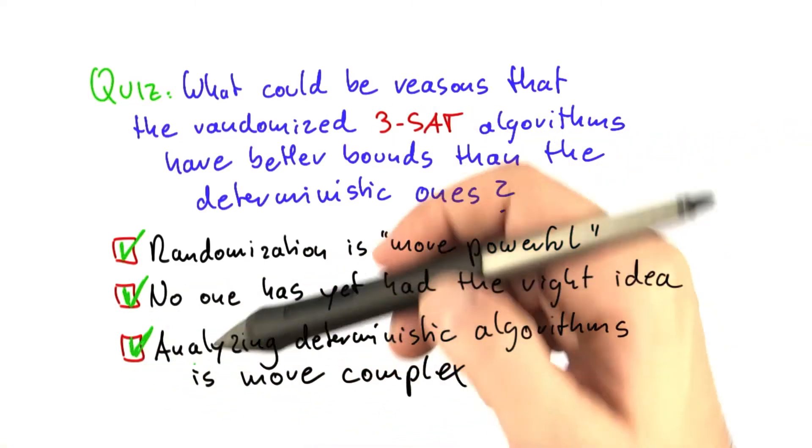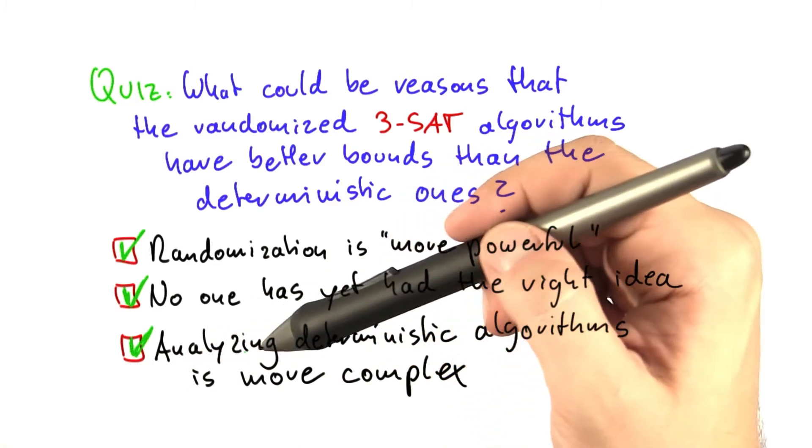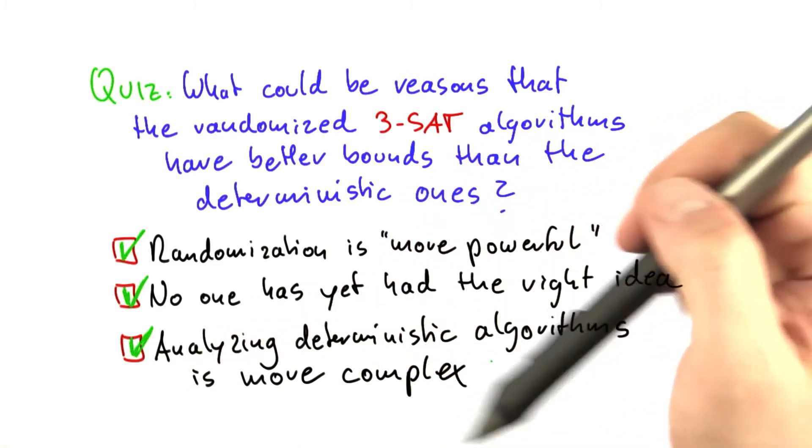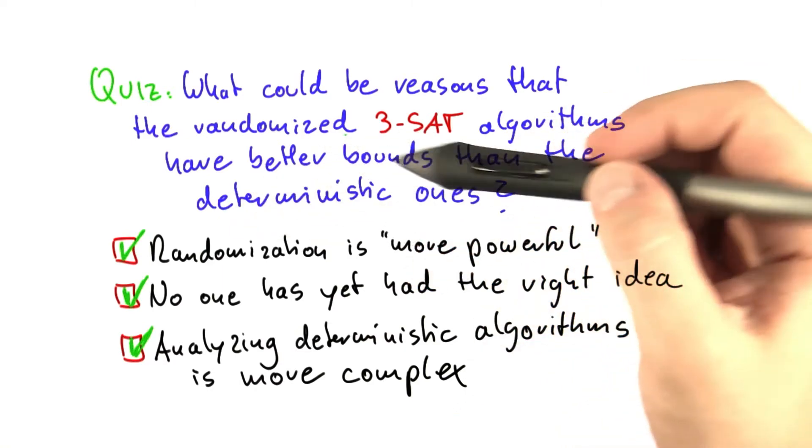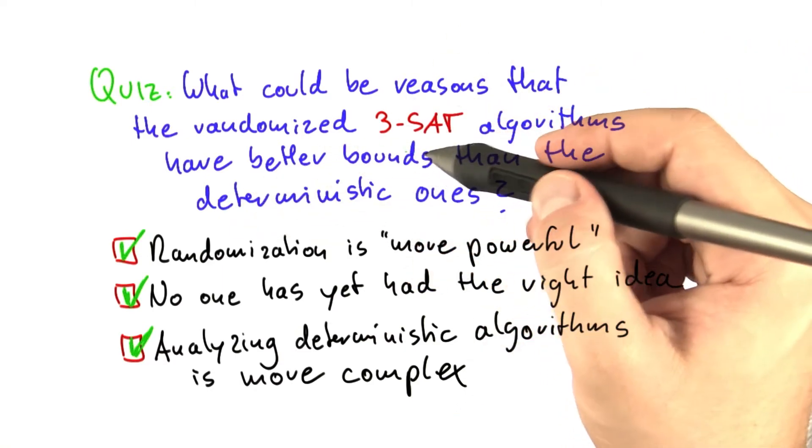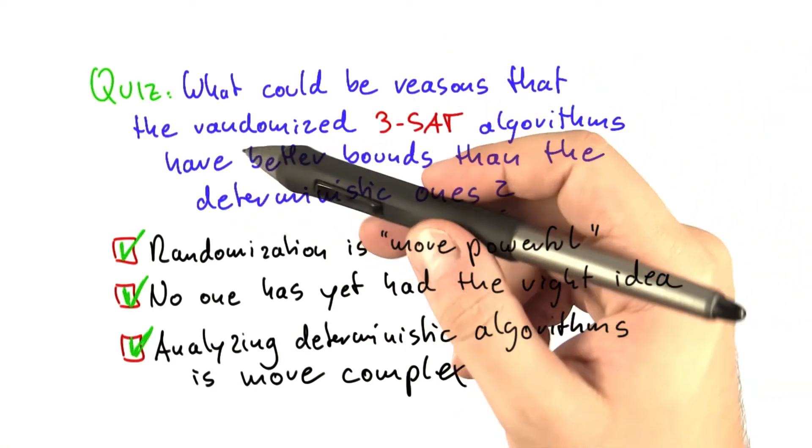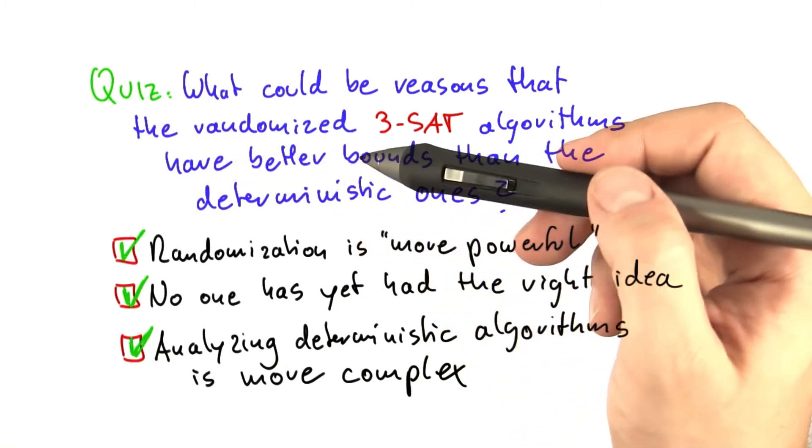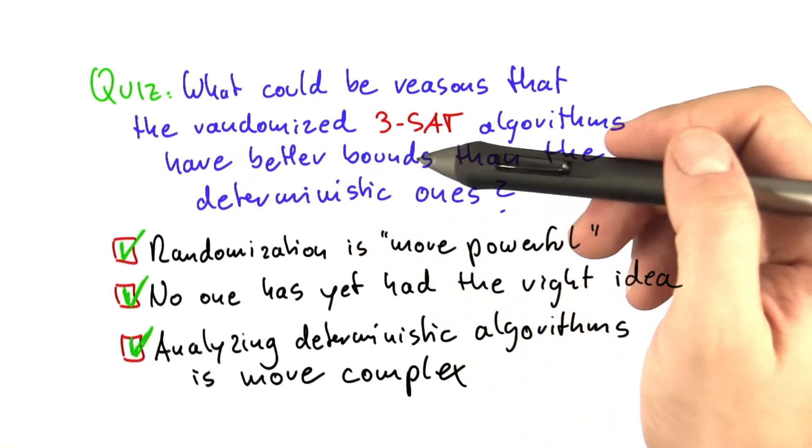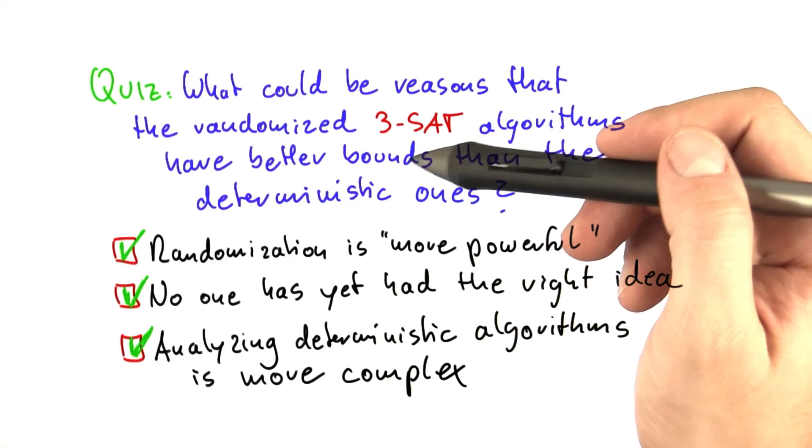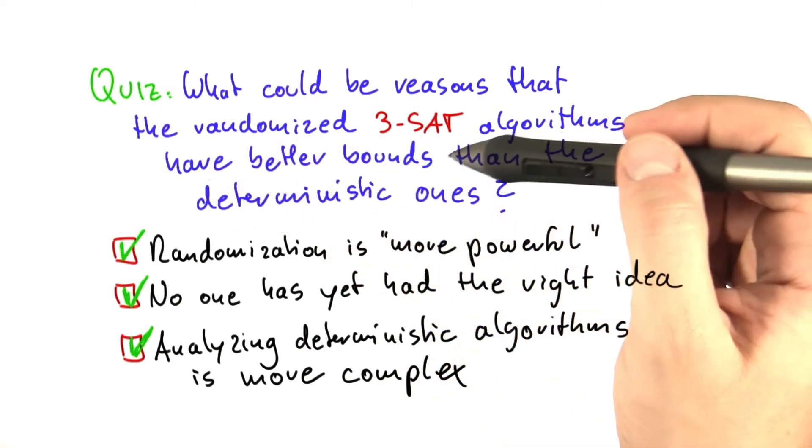And finally, I think this is also an important point. It could be that analyzing deterministic algorithms is just way more complex than analyzing the randomized ones. The 3-SAT algorithm, the randomized one that I've shown you with a running time of 1.334 to the power of n times some polynomial, is very simple. And its analysis is also not that complicated.